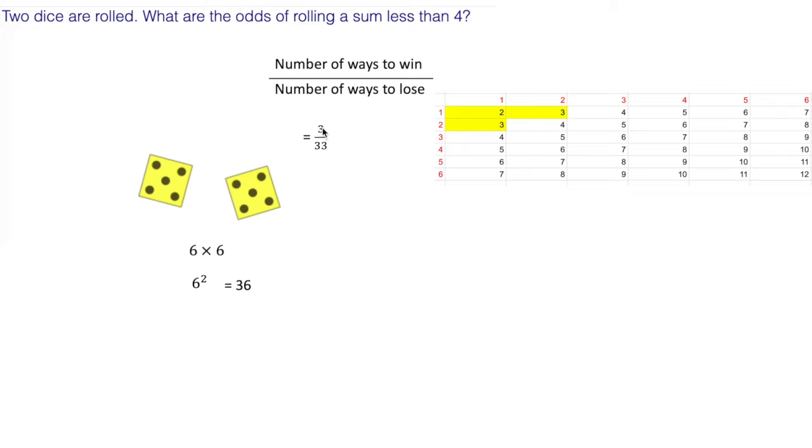The number of ways you can win, three, out of the number of ways you can lose, 33. Your odds are three out of 33. And that's it for odds. Have a good day.